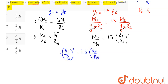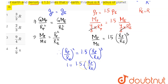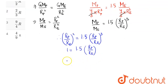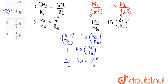Equating the two expressions, rp/re squared equals 1.5 times rp/re cubed. Canceling, we get 1 = 1.5 times rp/re. Since the radius of Earth is r, the radius of the planet comes out as r divided by 1.5, which equals 2r/3. So option number 2 is the correct answer.